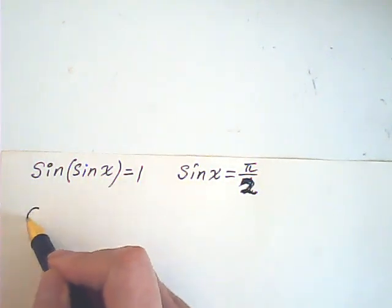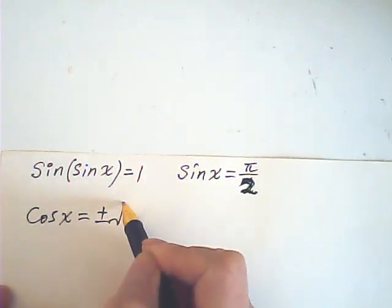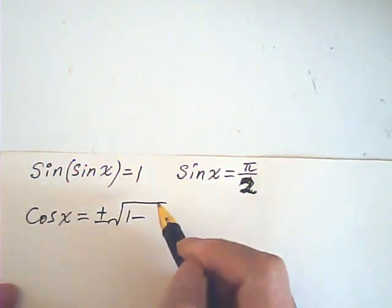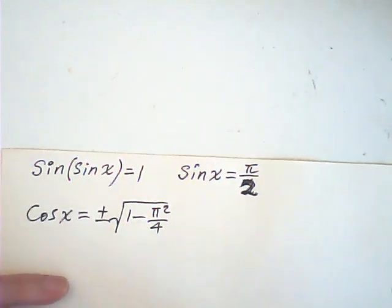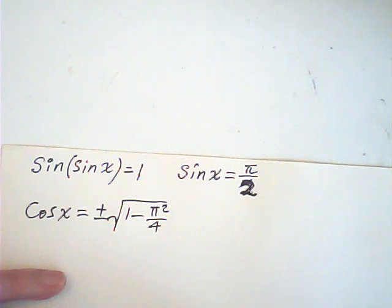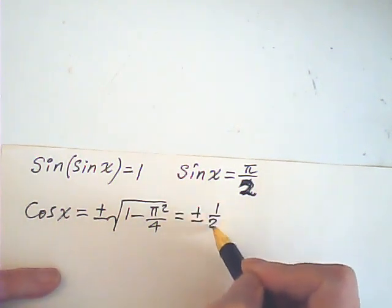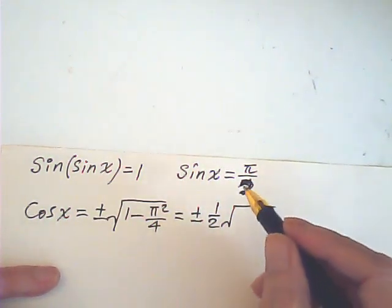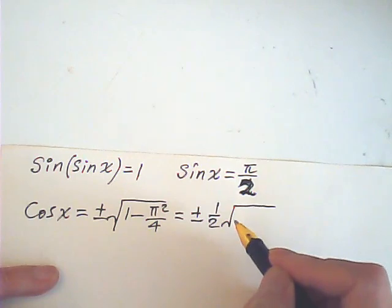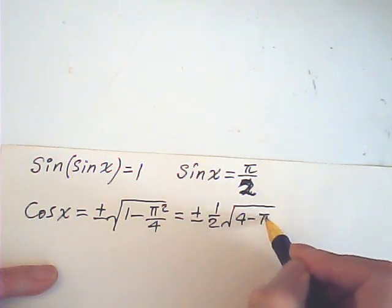From this, I know the cosine x is equal to plus or minus square root 1 minus pi squared over 4. So this is equal to plus or minus one half square root 4 minus pi squared.